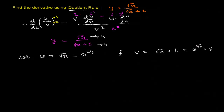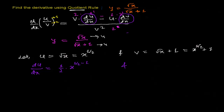When we apply the formula, we'll need du/dx and dv/dx. So let's find those now. Differentiating u with respect to x, we get du/dx equals, by the power rule, 1 by 2 times x to the power 1 by 2 minus 1.